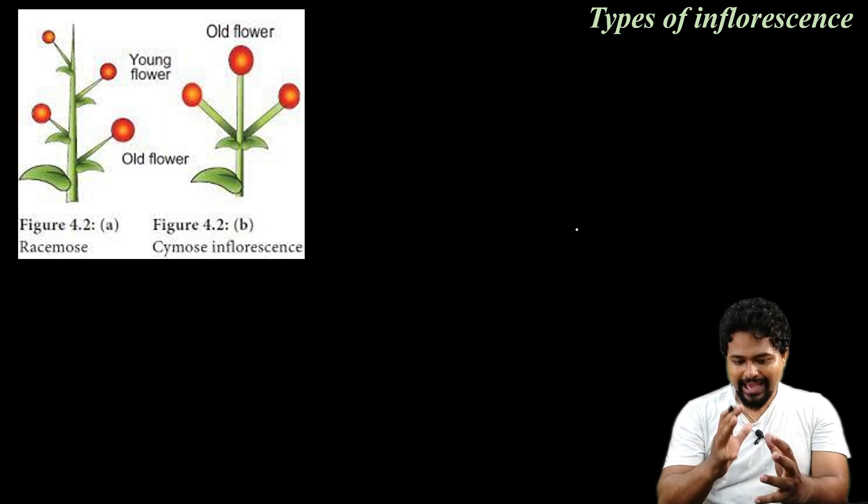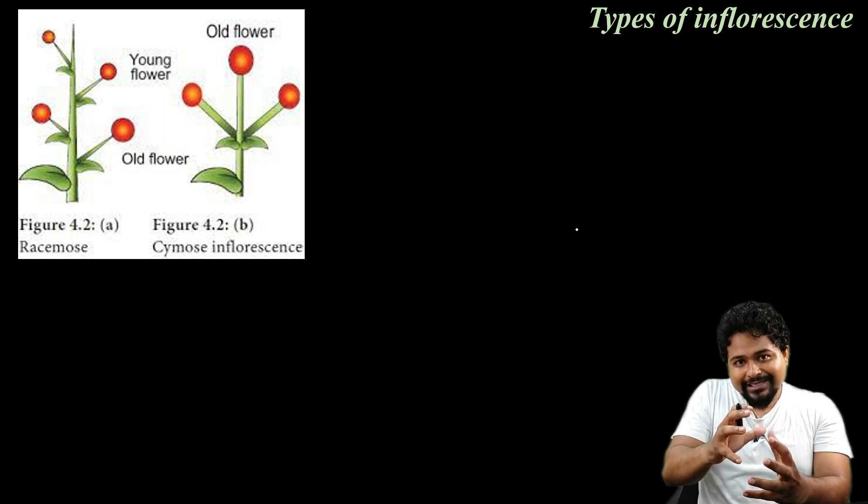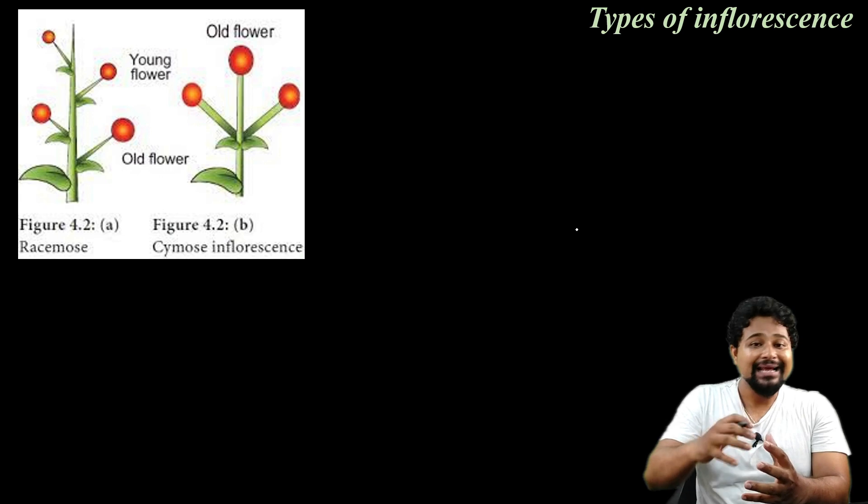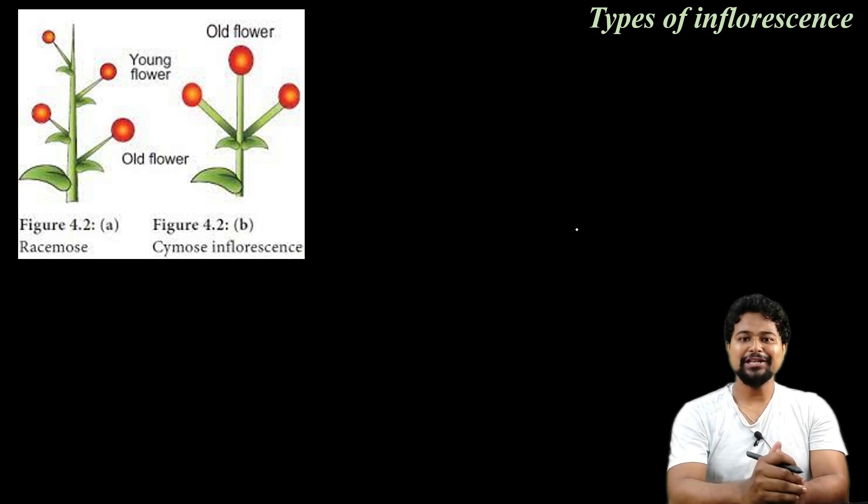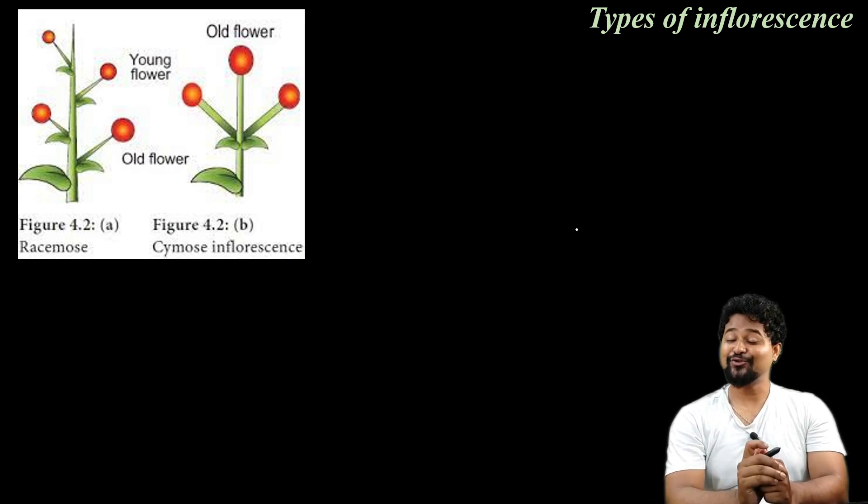So this is the type of inflorescence and morphology. This is the type of inflorescence that we will start in the next class. Inflorescence is the arrangement of flower on the floral axis — these inflorescence types will be found in the next class.